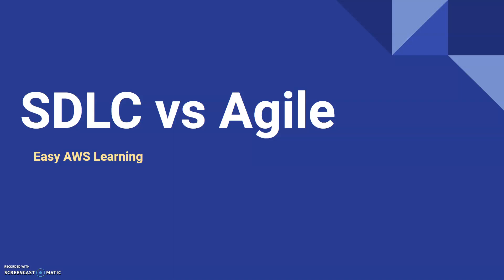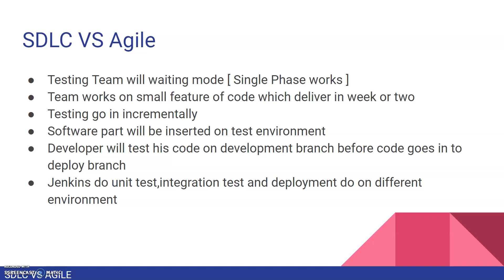SDLC versus Agile — both are development models where development is done and the product gets delivered to the customer. SDLC is the methodology used until now, and currently teams are picking Agile. We need to understand how SDLC differs from Agile, and how Jenkins and the CI/CD part integrates with Agile — that is what we will cover in this whole syllabus.